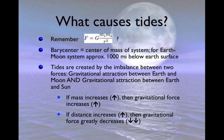Tides are created by the imbalance between two forces, gravitational attraction between the Earth and the Moon and gravitational attraction between Earth and the Sun, as well as what we'll call resultant forces.